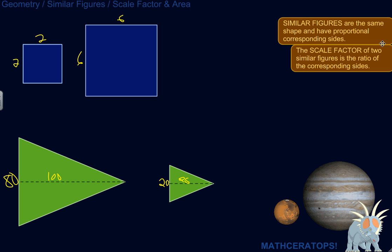First of all, similar figures, just to review, are the same shape, two figures that are the same shape, so like a square and a square, and they have proportional corresponding sides. So the ratio of 6 to 2 is equivalent to the ratio of 6 to 2. Maybe more obvious with a square.